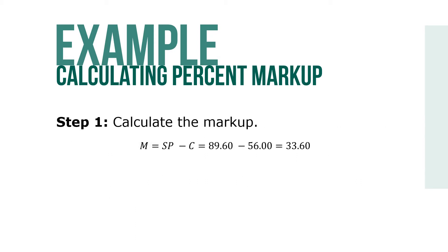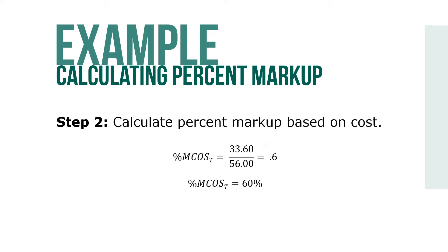Step 1: Calculate the markup. Markup equals selling price minus cost, or $89.60 minus $56, equals $33.60. Next, calculate the percent markup based on cost. Percent markup based on cost equals $33.60 divided by $56, which equals 0.6, or 60%.